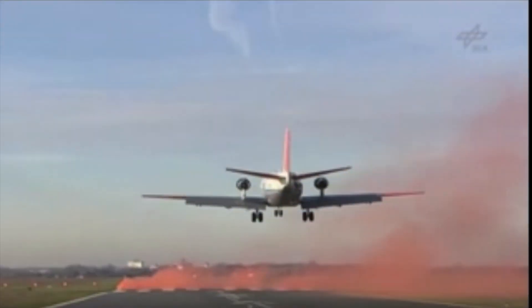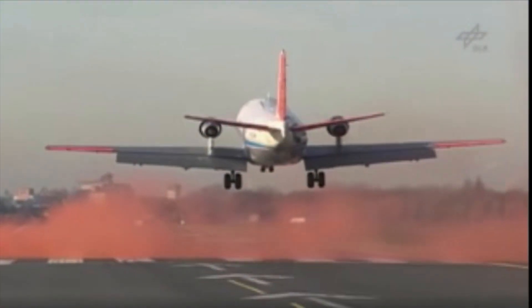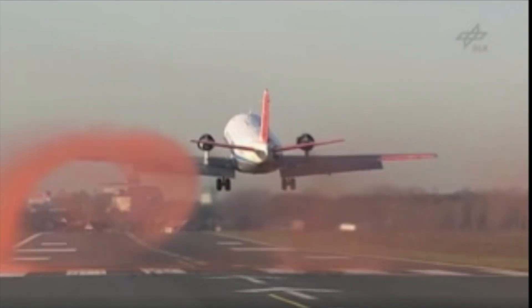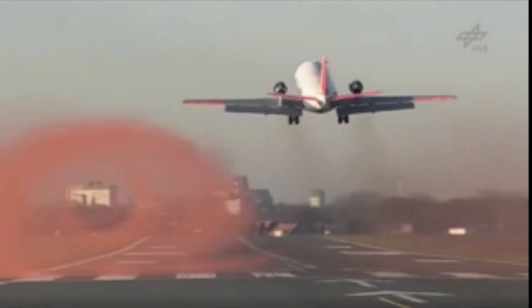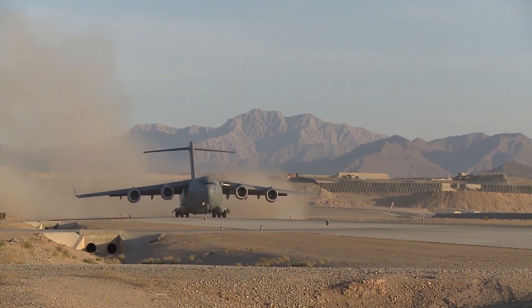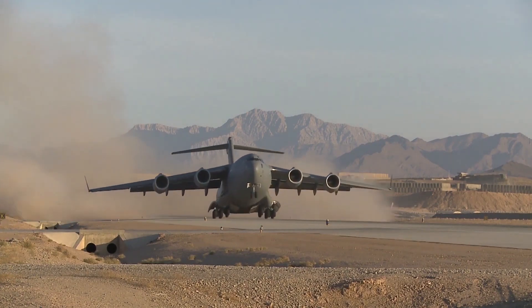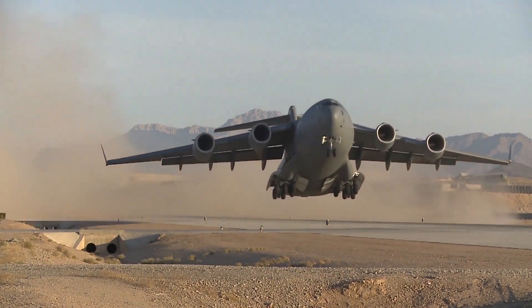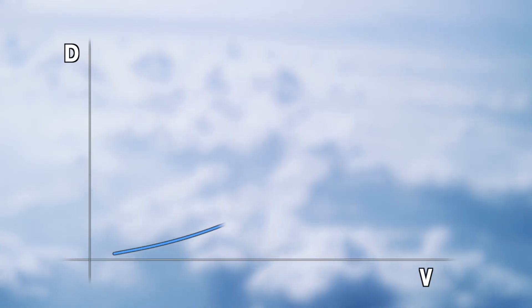Regarding induced drag, we have already said that it is produced by the creation of windy vortices, especially when aircraft fly at low speeds. Although the vortices never disappear, they get smaller as the plane accelerates. In this graph, we can see the change of both drag forces with respect to the airspeed.